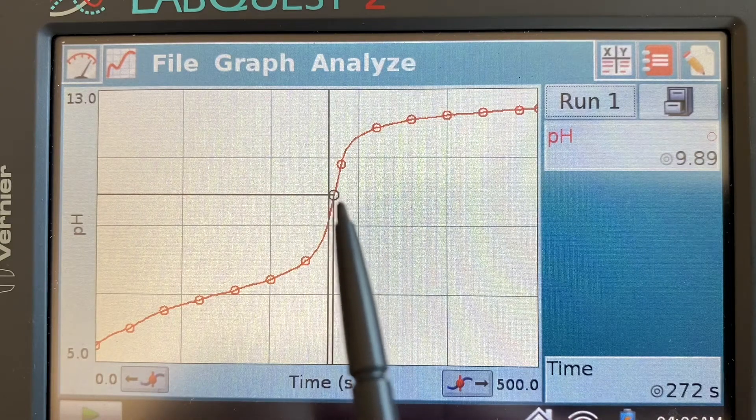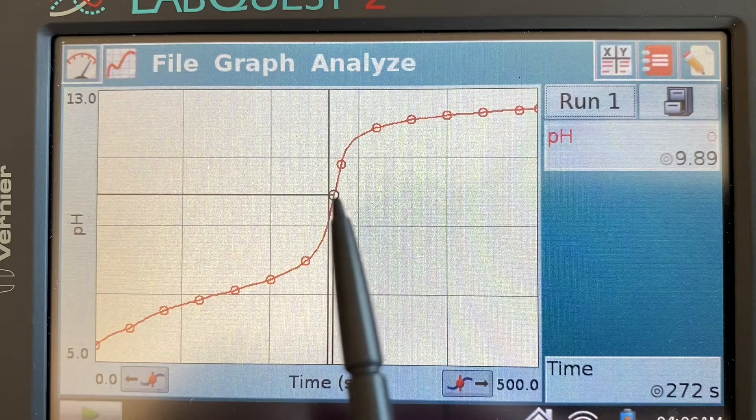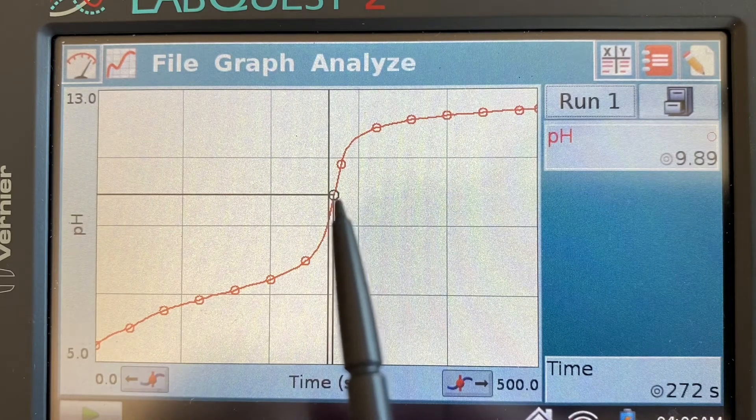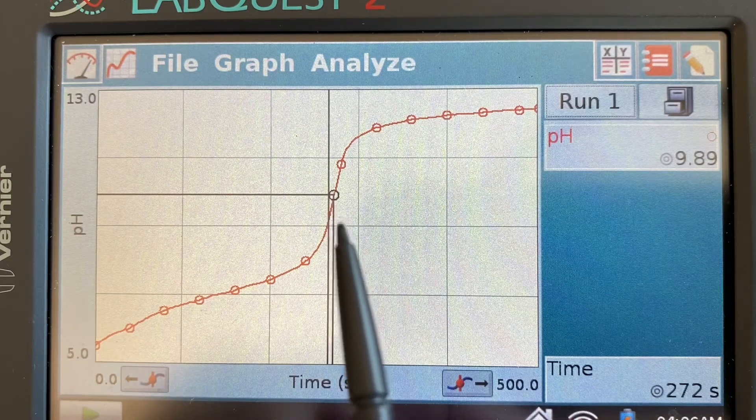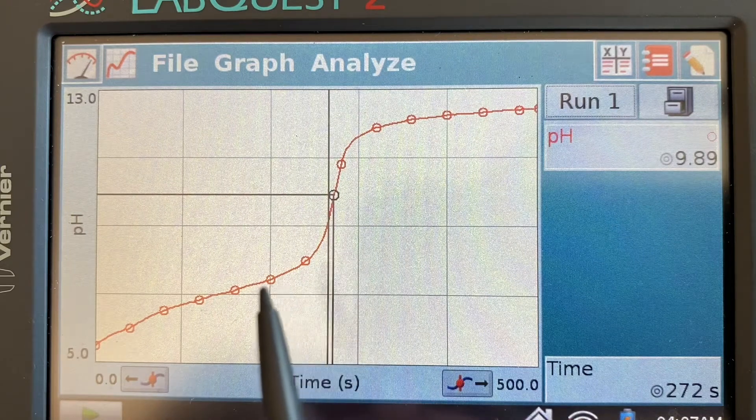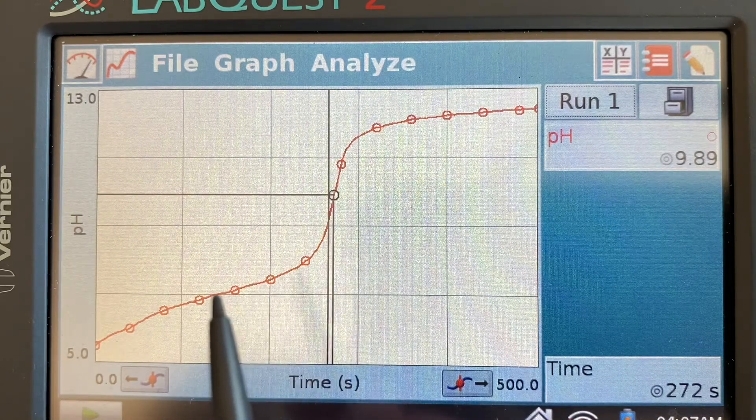So there's our equivalence point or we're approximating it as best we can. To find the Ka of our weak acid we need a second point on the graph and that is the point exactly halfway to the equivalence point.